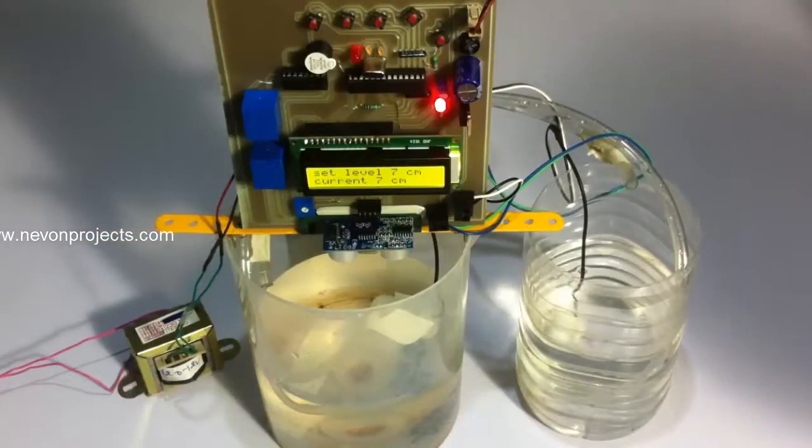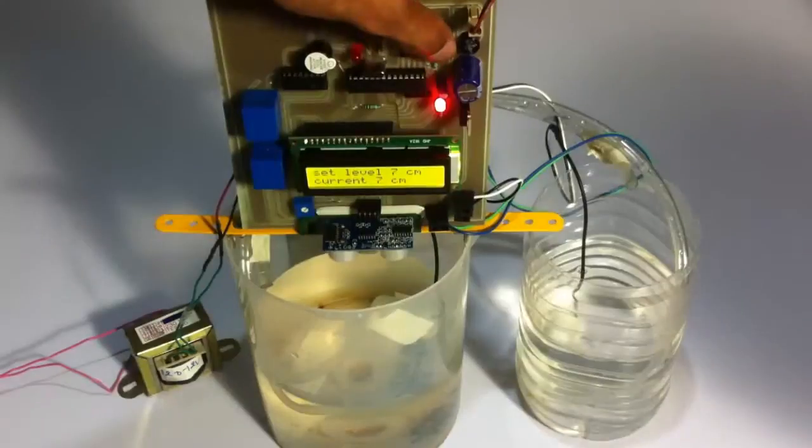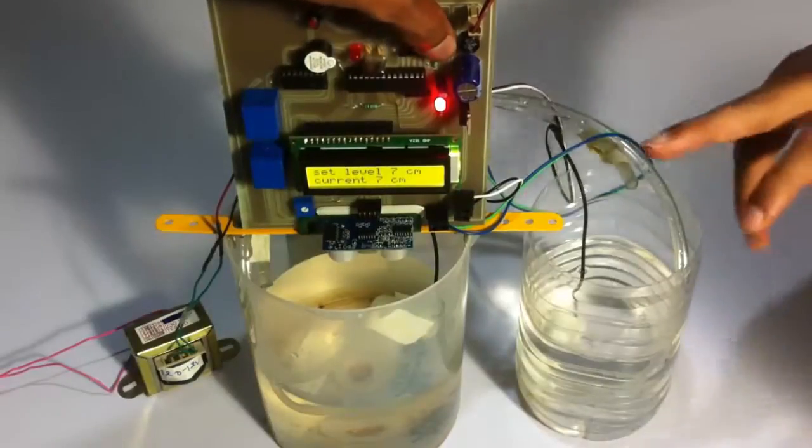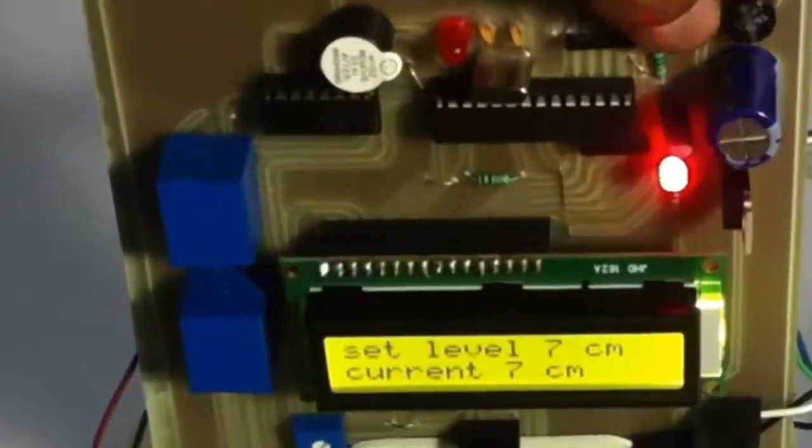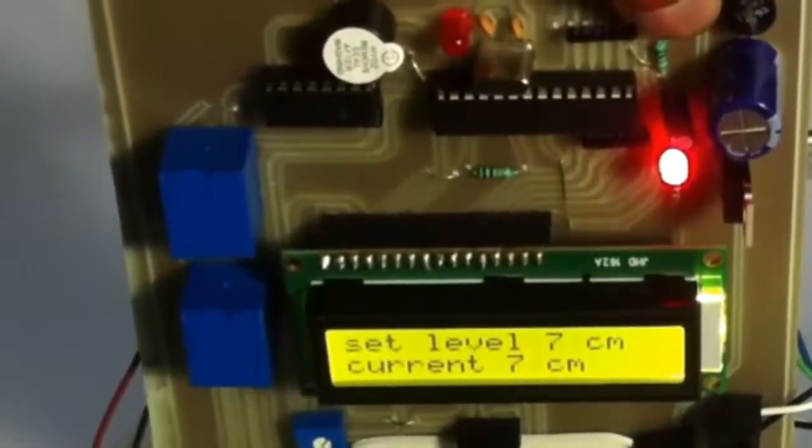Now let's see how it reduces the water in that particular container. For reducing the water level, let's set this value to a greater value. For that purpose, we first reset the system.